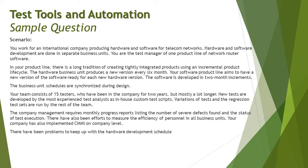In your product line there is a long tradition of creating tightly integrated products using an incremental product lifecycle — essentially a legacy system with incremental product development. Consider how agile practices and close team collaboration could impact this, and how two business units need to coordinate. There can be communication gaps or information-sharing challenges. As you read the scenario, keep highlighting the key points that will help you answer questions afterward.